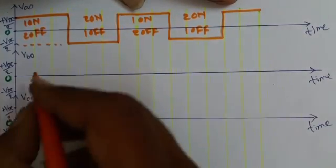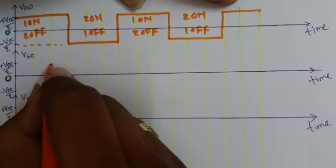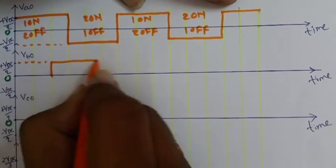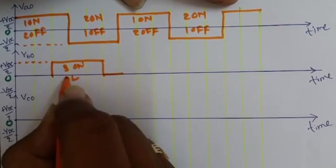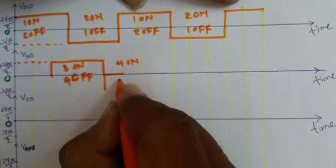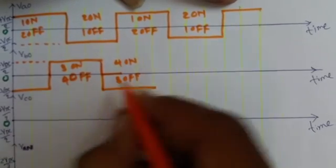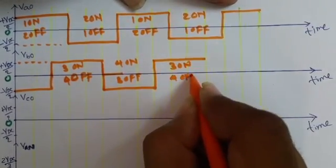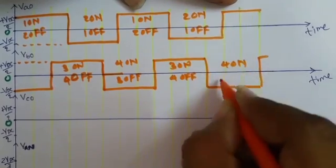Now, for V_BO output it should be 120 degrees apart with respect to V_AO. So here we will start to trigger switch 3 and 4. If switch 3 is on and switch 4 is off, in that case plus VDC/2 output is there, and that is delayed by 120 degrees with respect to V_AO. Then if switch 4 is on and switch 3 is off, then output will be minus VDC/2. This is how we will have the output, and it keeps on repeating.